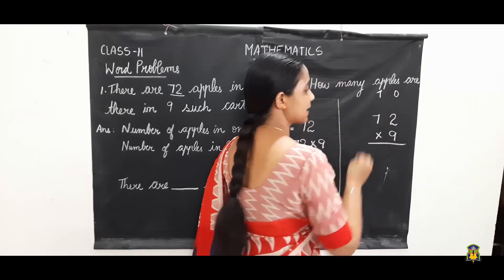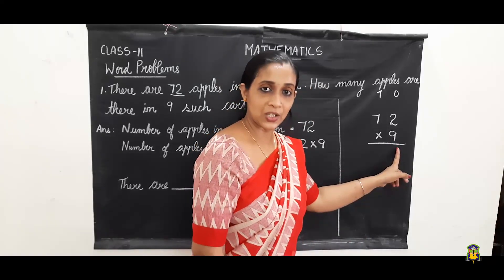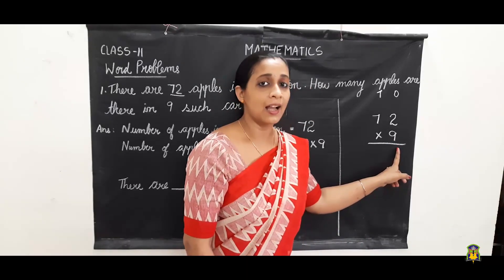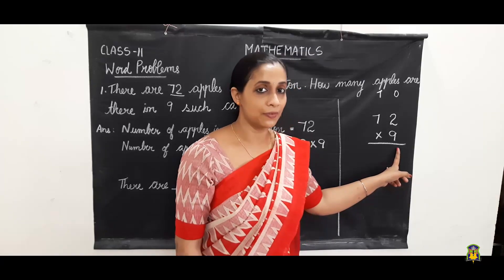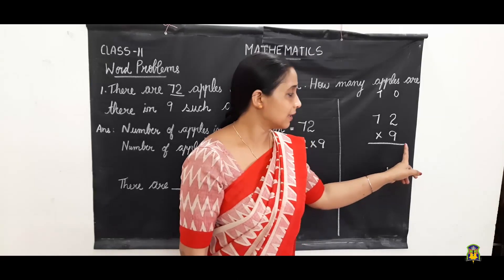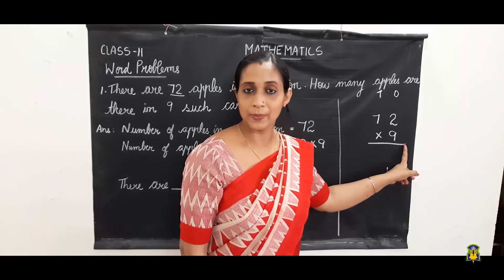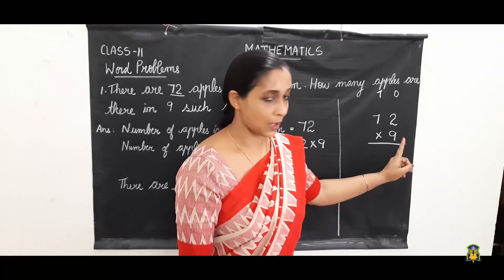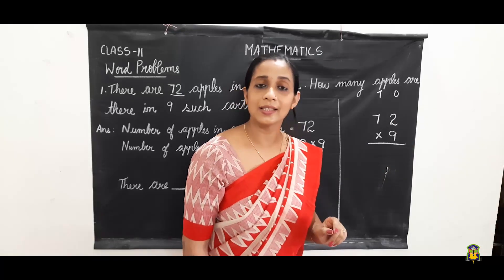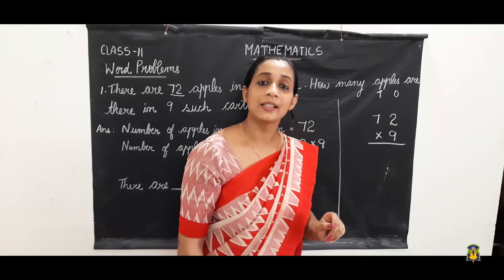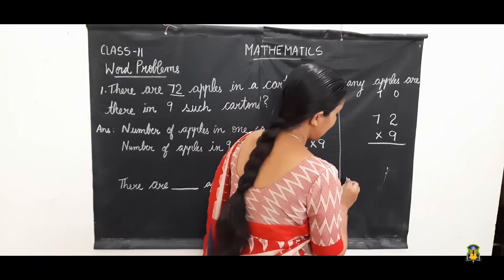One's place, ten's place. We will do multiplication in one's place first. I hope everyone has learned the table of nine — only if you know the table of nine will we be able to do this problem. So nine twos are? Nine twos are eighteen.